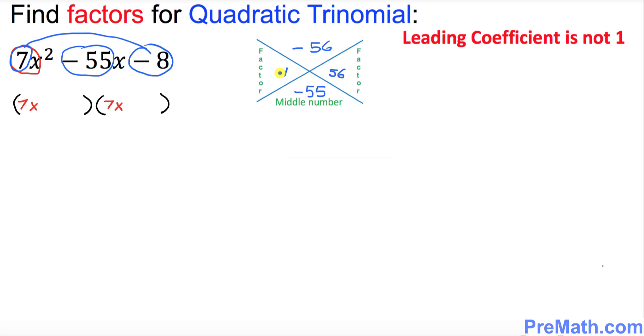Now we need to adjust these signs. Since this is a negative 55, that means this 1 is going to be with the positive sign and 56 with the negative sign. So we have these two factors, positive 1 and negative 56. I want you to put down positive 1 in the first parentheses and negative 56 in the second parentheses.